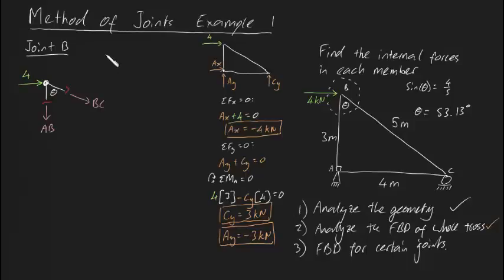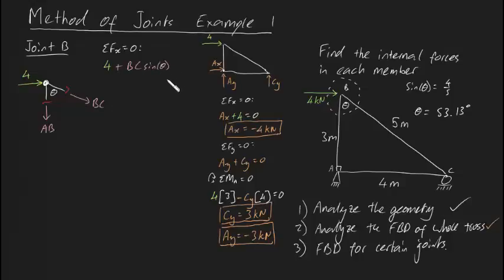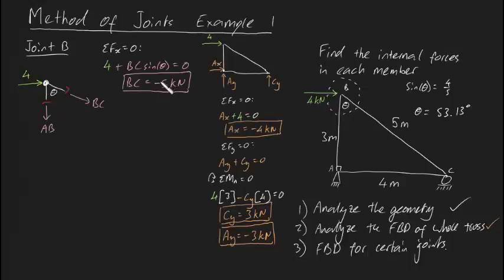Sum of forces in the x direction at joint B equals zero. The four kilonewton force acts purely to the right, plus the horizontal component of BC — which is BC times sine theta — equals zero. We know theta, so solving gives BC equal to minus five kilonewtons. There's a negative sign here — I won't talk about tension or compression yet, but that's quite interesting.